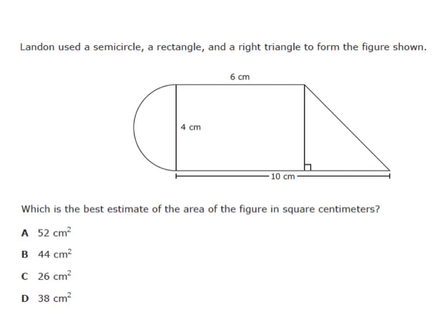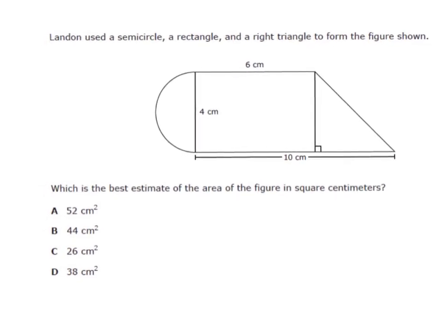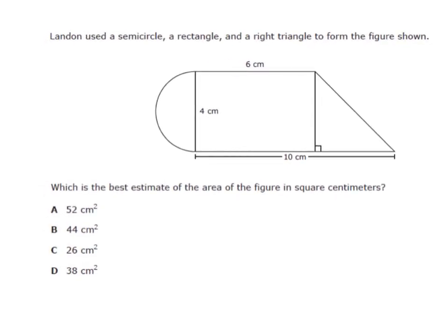Last example: Landon uses a semicircle, a rectangle in the middle, and a right triangle to form the figure shown. Which is the best estimate of the area of this figure in square centimeters? I've got three different shapes and this wants me to do the best estimate of the area. I'm going to find all three pieces and add them together.